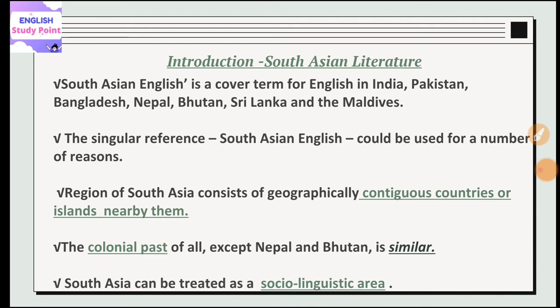South Asia can be treated as a socio-linguistic area. This is why language diversity exists. If we take the example of India, South India has different languages and North India has different languages. In these countries, different forms of society also exist, with variations in both language and society — this is why it is a socio-linguistic area.